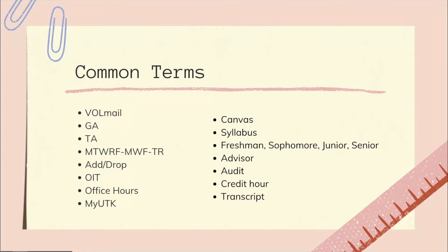MyUTK is your hub for all of your UT information — this is where you register for classes, pay your bills, and request a transcript. Canvas is the hub for all of our schoolwork, where your professor will keep up with your assignments and keep your class organized online. The syllabus is an outline of all subjects in a course and is your go-to for each class — it will have your professor's information, details about the class, and what you need.